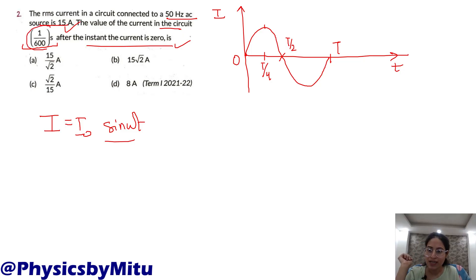Current zero here at time zero. Basically we need to find current at small t equals 1/600 seconds. The question is: find the current at 1/600 seconds.